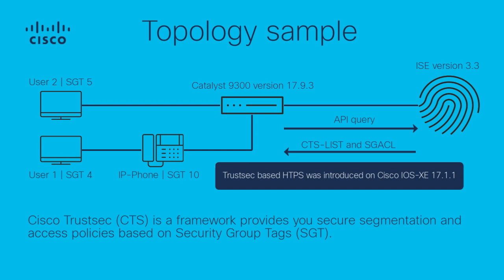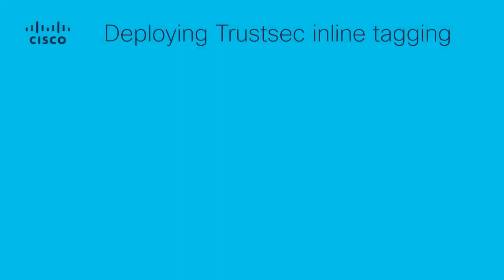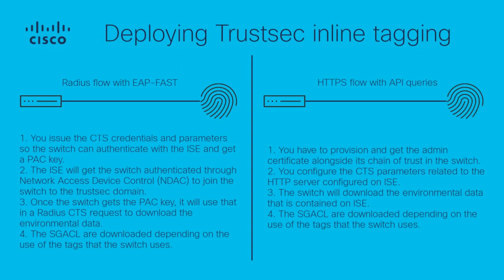It is important that you review the version of your switch, as the feature was introduced on Cisco IOS XE 17.1.1, where it gets a PAC key that is used later on to download the CTS list and Security Group Access list. This information is sent over a RADIUS protocol in this instance.